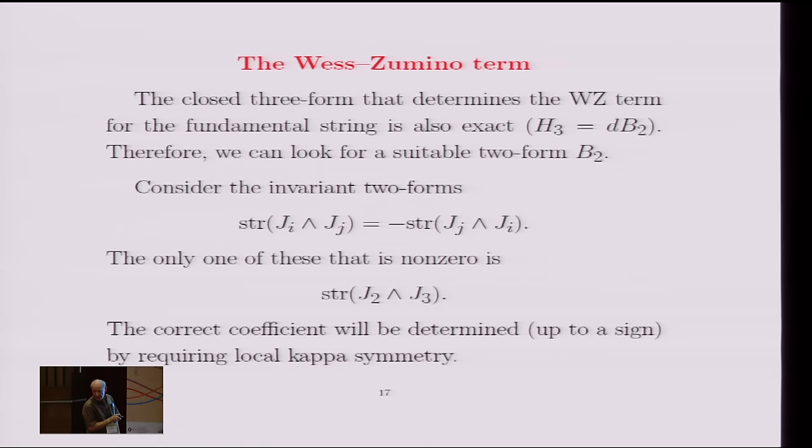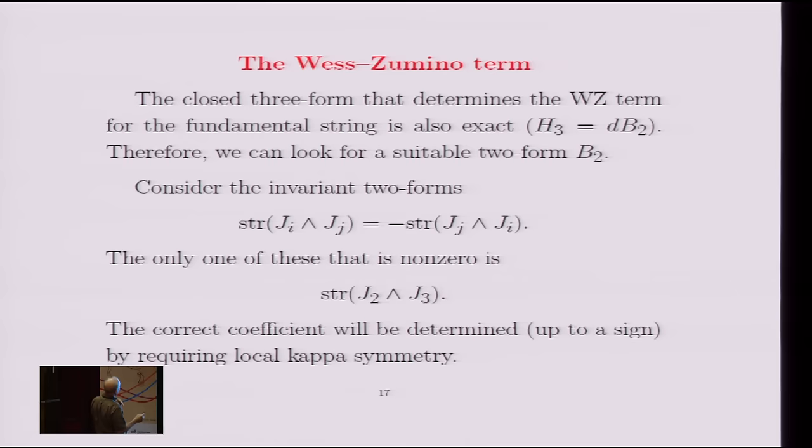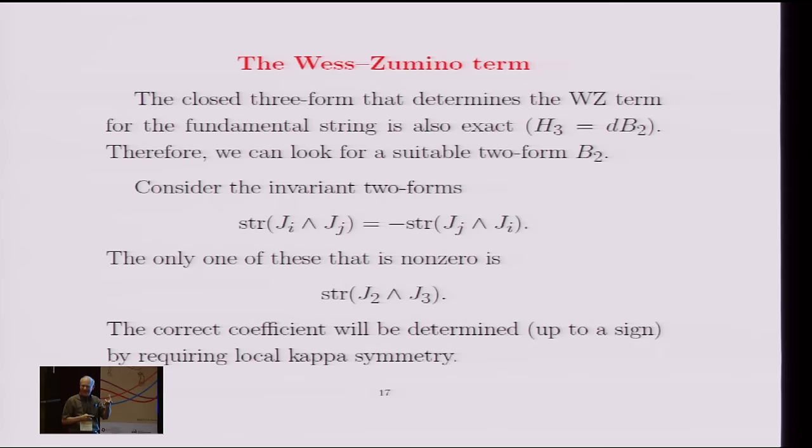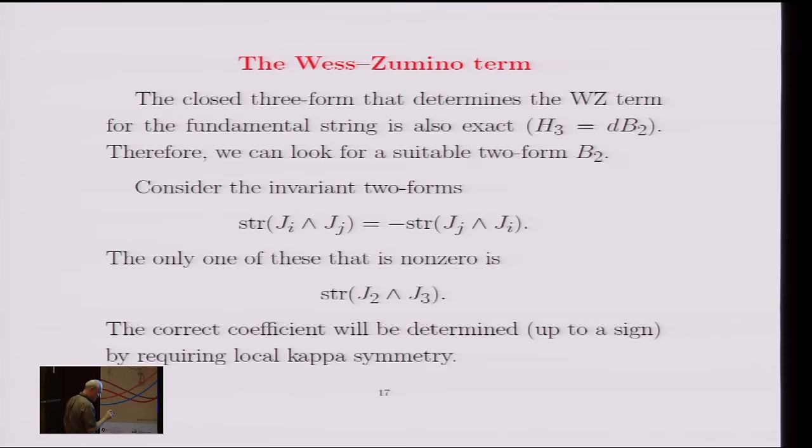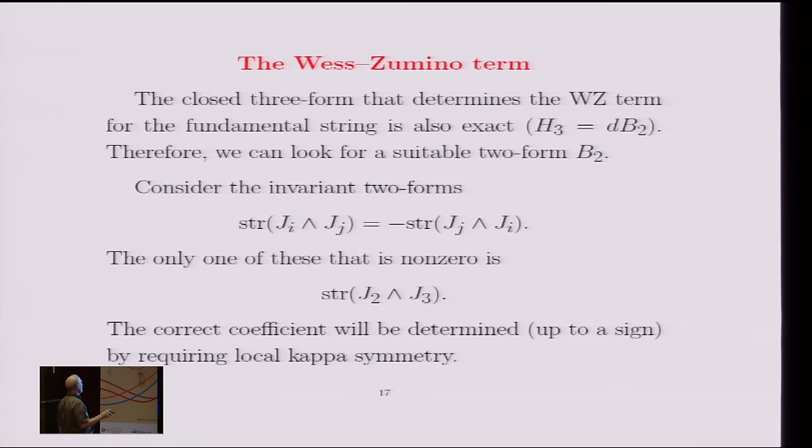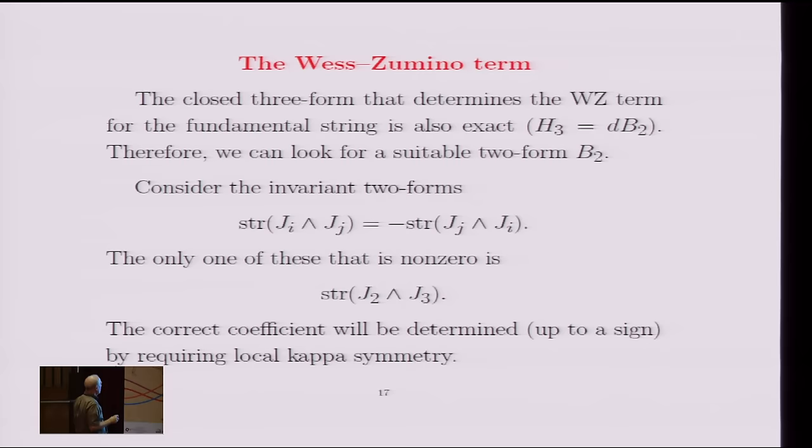But it turns out, first of all, these things are anti-symmetric. We have this cyclicity inside the trace, but these are one-forms, so you get an extra minus sign when you do the cyclic maneuver. So that's why you get the minus sign in this formula. And so of the three remaining possibilities, only one of them is non-zero, and that's J2 wedge J3 in my notation. And so one expects the Wess-Zumino term to be proportional to this. And the correct coefficient is determined up to a sign by requiring local kappa symmetry.